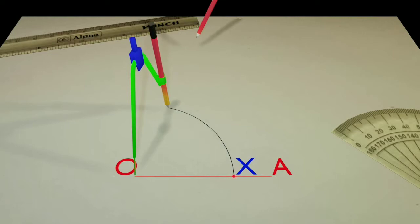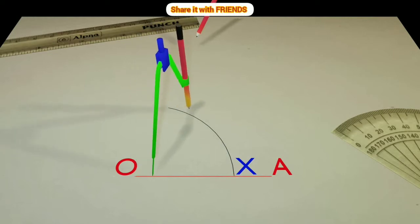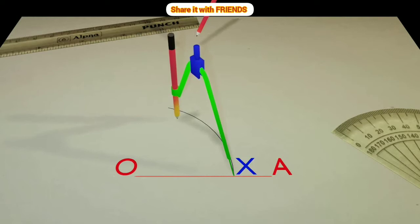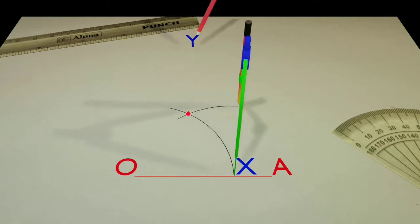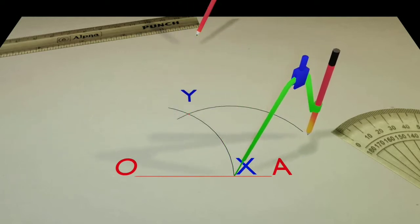Then another circle arc of the same radius is drawn with the tip of the compass placed at point X. Make it slightly larger. It intersects the previous arc at the point Y.